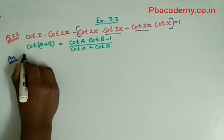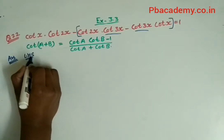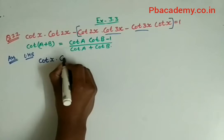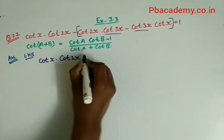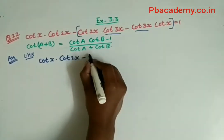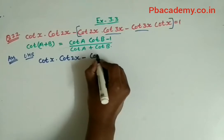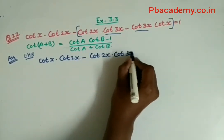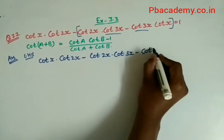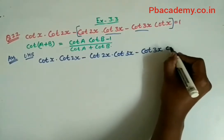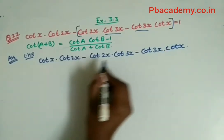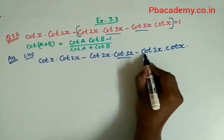We will take the left hand side which is cot x · cot 2x - cot 2x · cot 3x - cot 3x · cot x. I will take cot 3x as common from these two terms.